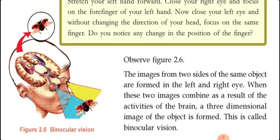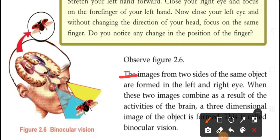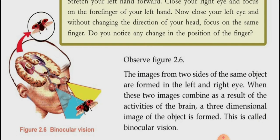The images from two sides of the same object are formed in the left and right eye. When these two images combine as a result of the brain's activities, a three-dimensional image of the object is formed. For example, you are watching this with your right eye and left eye — two images are formed in the brain. You are not seeing two phones or two screens; your brain combines those two images and gives you a three-dimensional single image of the screen or object. That is called binocular vision.